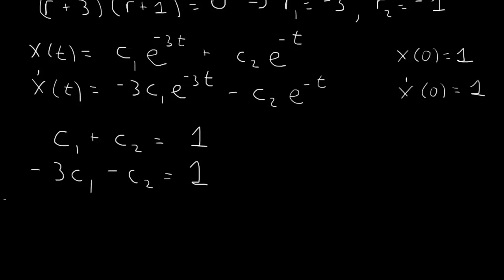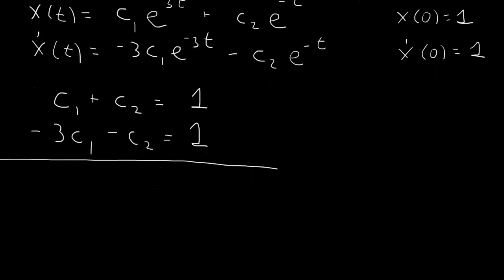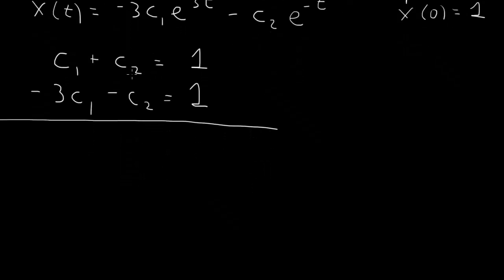This is a system of two first order equations with two unknowns, linear. We can eliminate c2 simply by adding these two, so we have minus 2 c1 equal to 2, so c1 equals minus 1. And then from the first equation, c2 must equal 2.